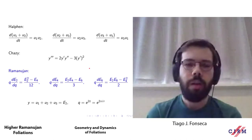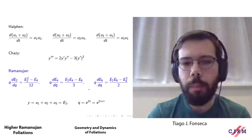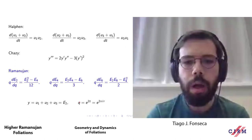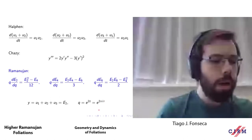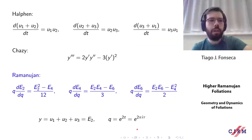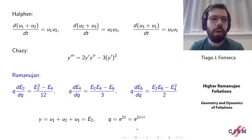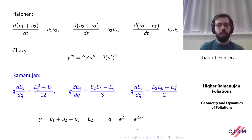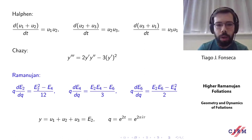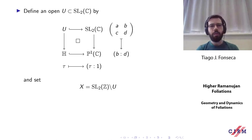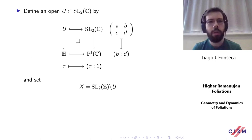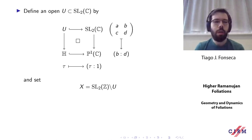Geometrically they're essentially all the same. The Einstein series can be seen either in the variable q in the unit disk or in the variable tau in the upper half plane. The reason these equations were rediscovered many times in the literature is essentially because they satisfy some symmetry with respect to the group SL2. What I want to do now is to give a first geometric interpretation of these equations in which the relation with SL2 will be clear.